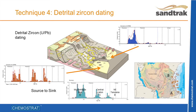Detrital zircon dating provides a forensic fingerprint to identify individual sand packages based on differing populations of grains by tying them to specific source terrains. This tool has proved invaluable to improve sediment dispersal mapping and detailed reservoir correlation. Our state-of-the-art in-house laboratory is capable of processing huge numbers of samples, analysing over 10,000 concordant zircons in the first year of operation.